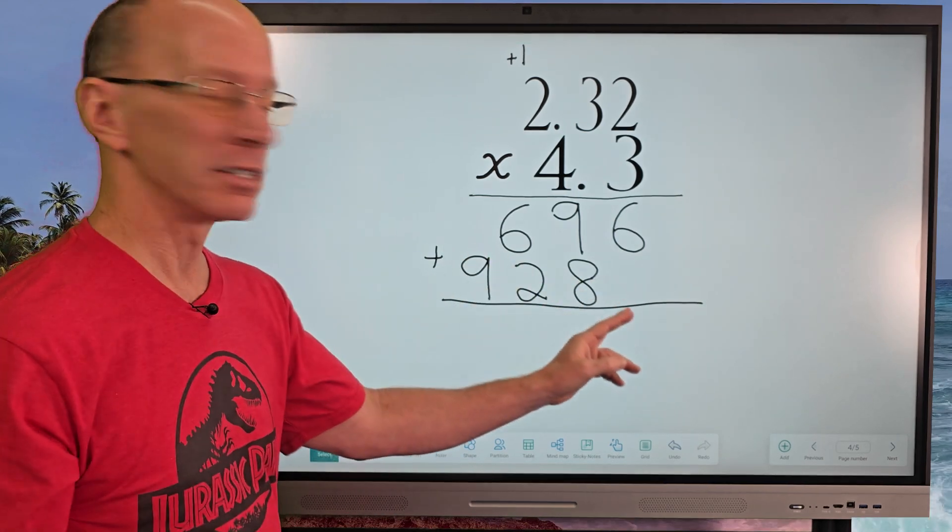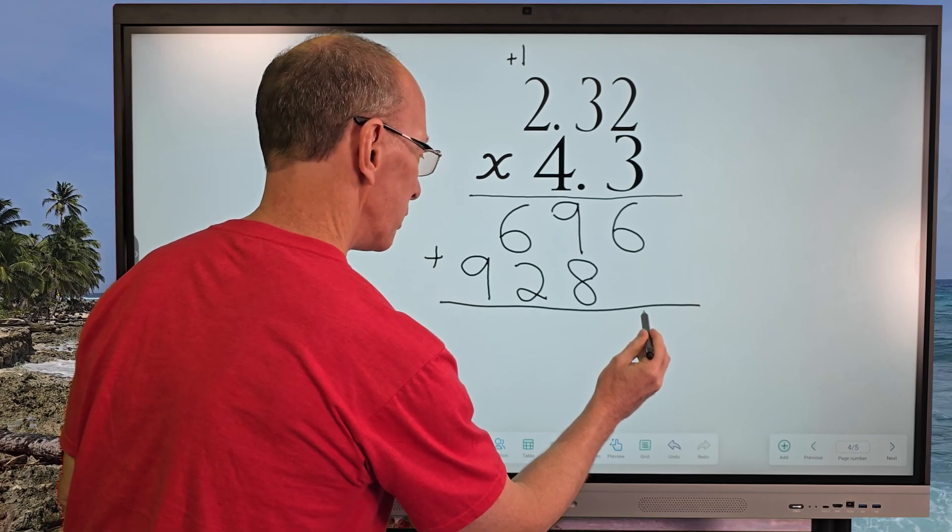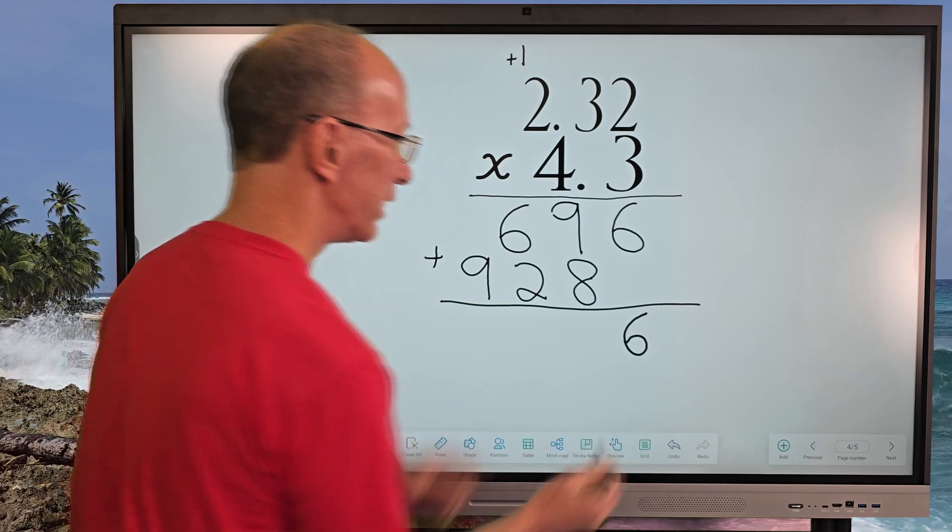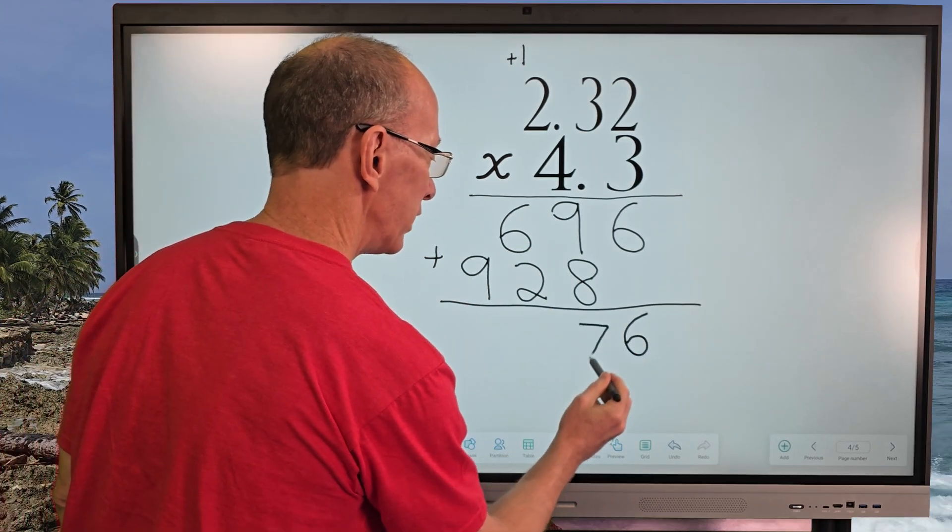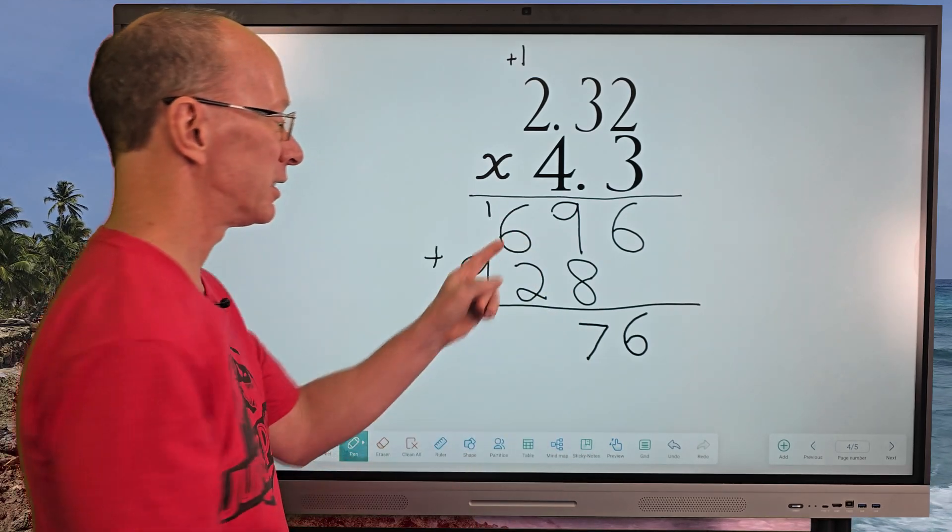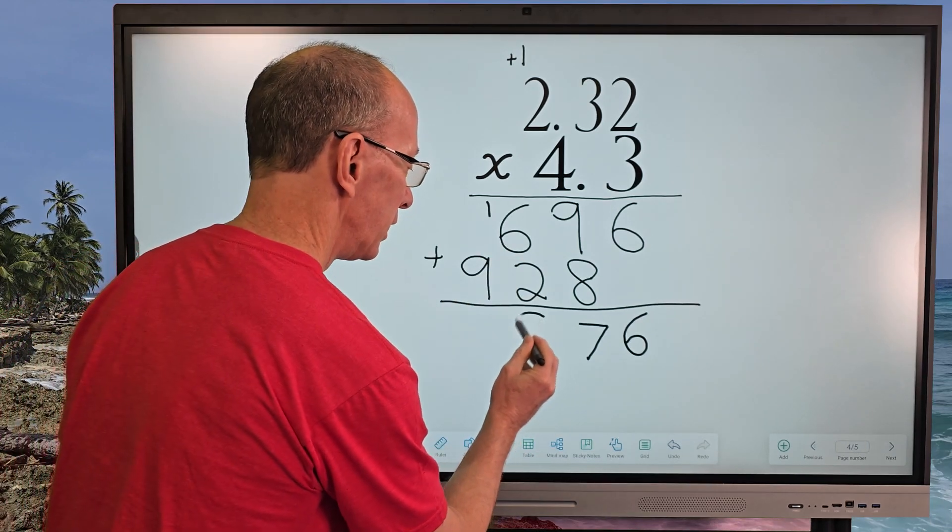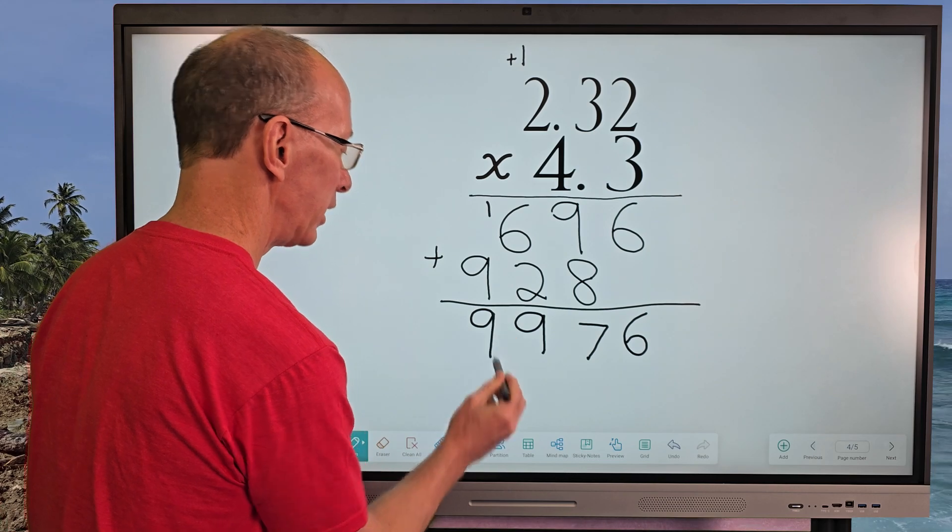Let's go ahead and add these numbers. 6 plus 0 would just be 6. Put 6 right here. And then 9 plus 8, which would be 17. Put the 7 here, carry the 1. And then 6 plus 2, which would be 8, plus the 1, which would be 9. And then this 9, we just bring all the way down right here.